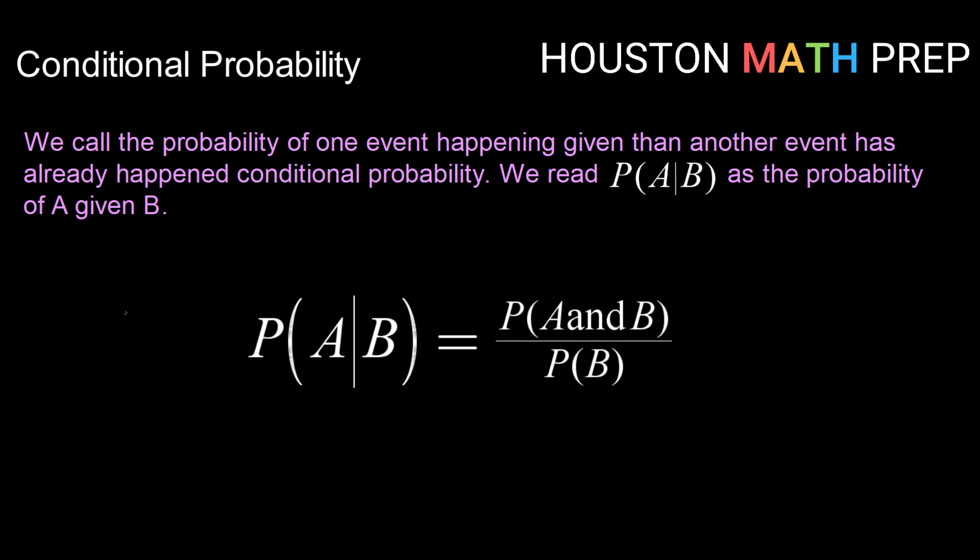So conditional probability is what we call the probability of one event happening given that another event has already happened. So the notation for that looks like this. We have probability, we have A, this straight vertical line, and then B. And we read that as the probability of A occurring given that B has already occurred.